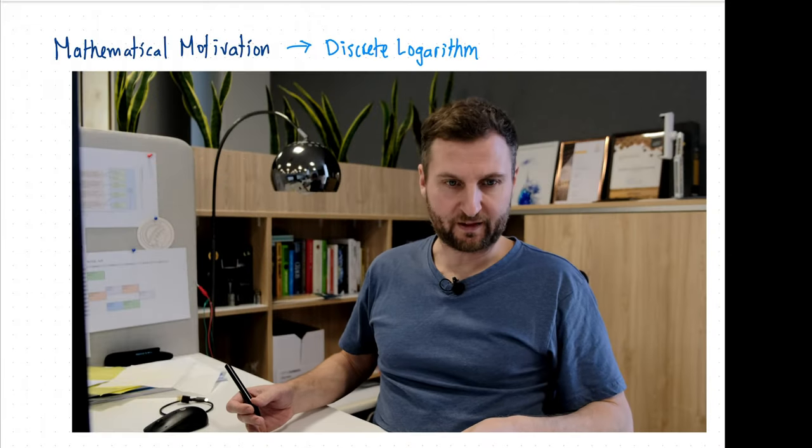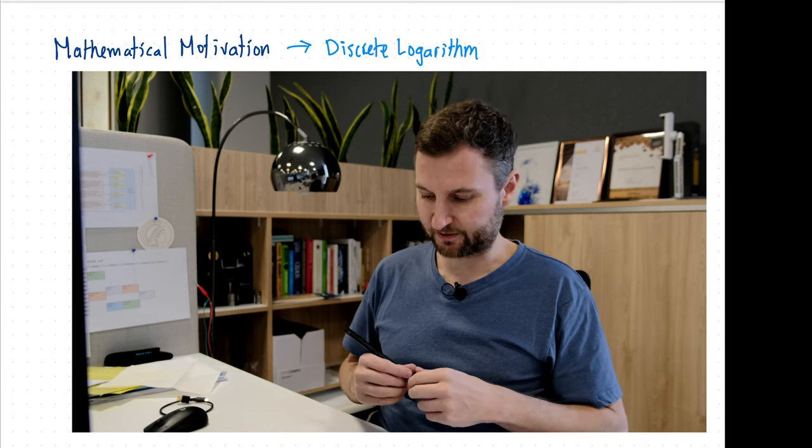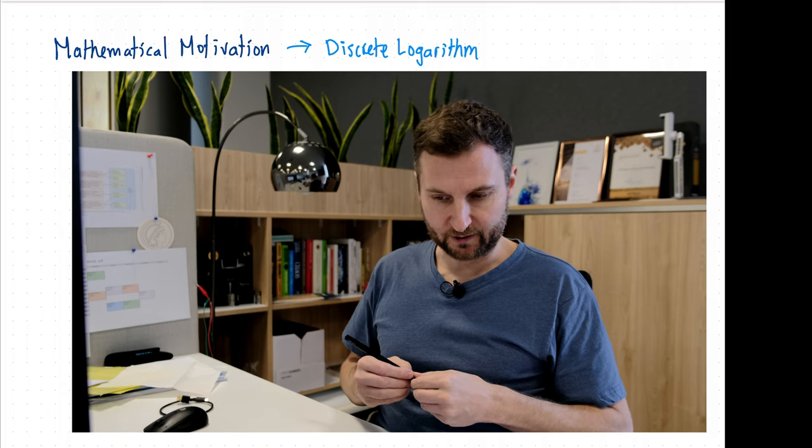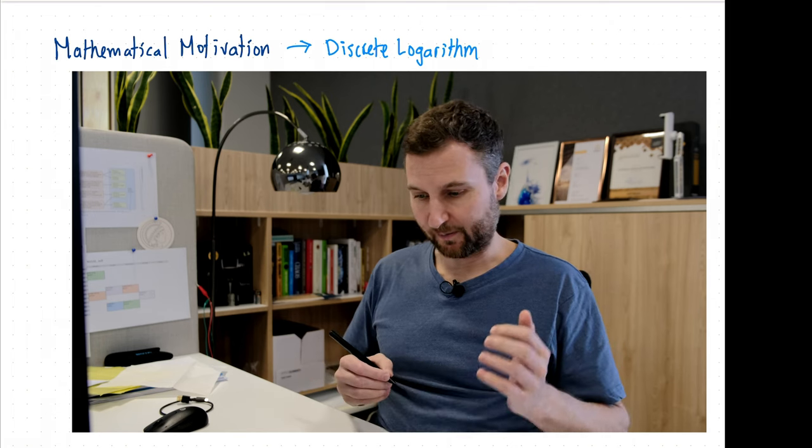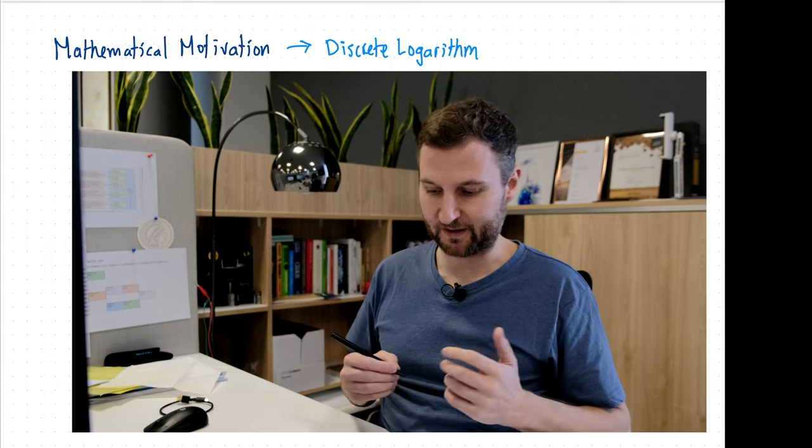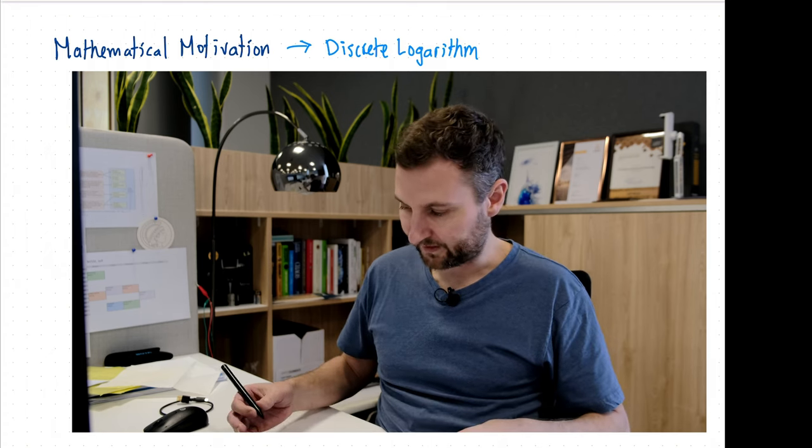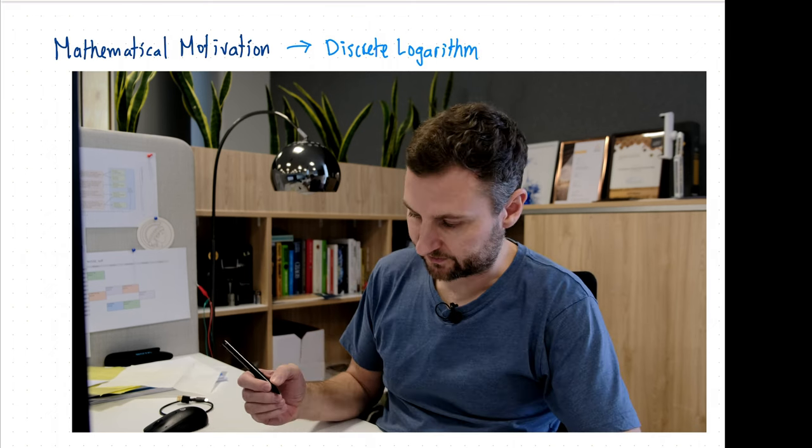Here I want to go over some of the mathematical motivation for the discrete logarithm. We're going to look at a few toy examples, and then we're going to look for patterns that can help us understand why the discrete logarithm is used cryptographically and the solution that it can solve.